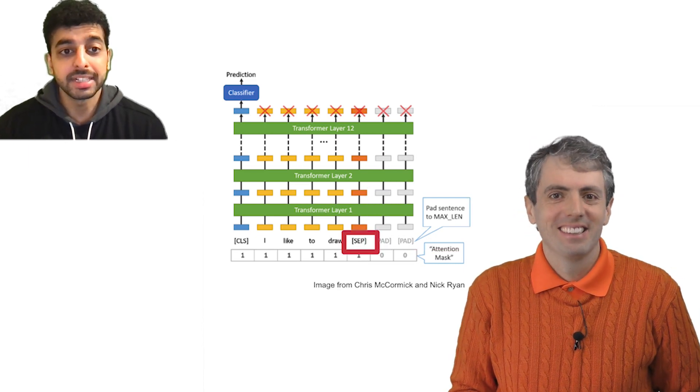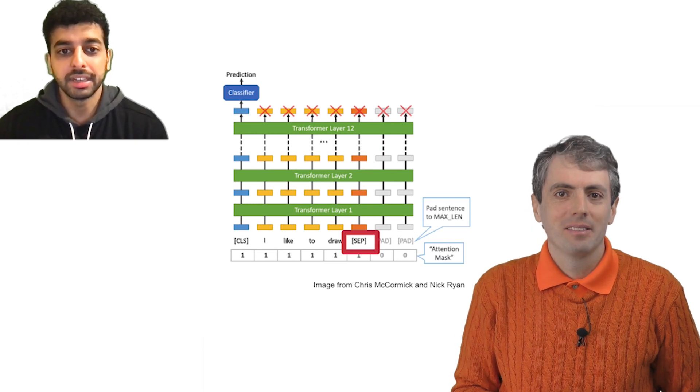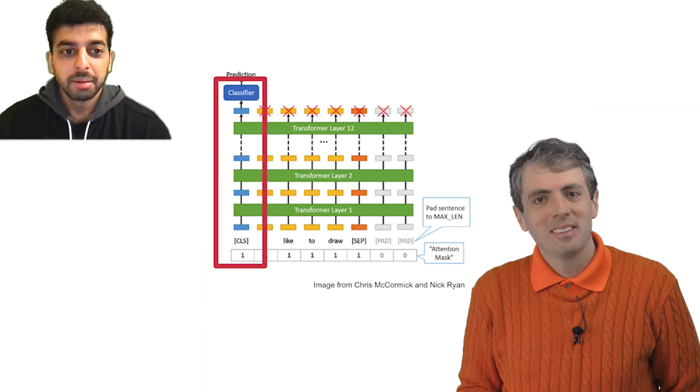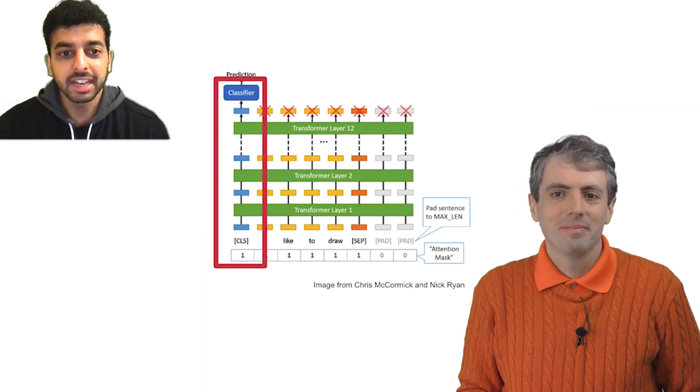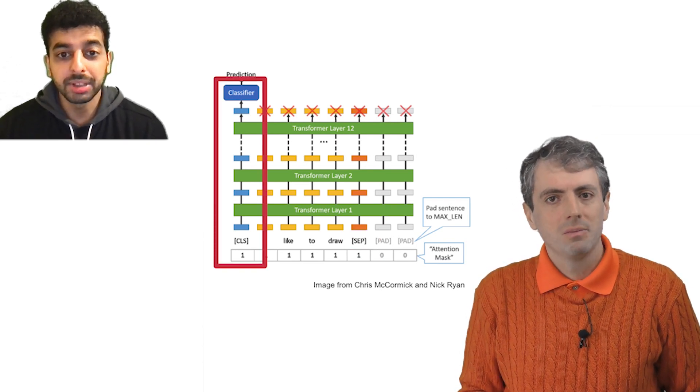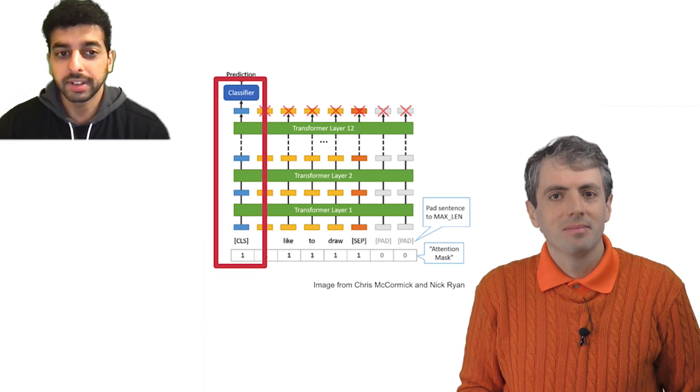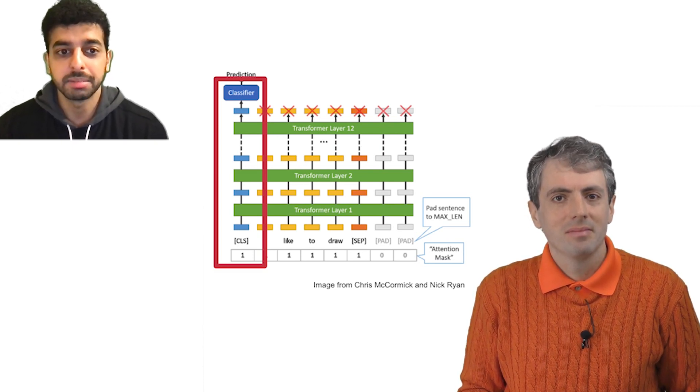The SEP token separates different parts of your input, like if you have multiple sentences or if you have a question and an answer pair. Probably most importantly, the CLS token is where, for example-level tasks, you can attach a classifier to decide if a sentence has positive or negative sentiment, for example.